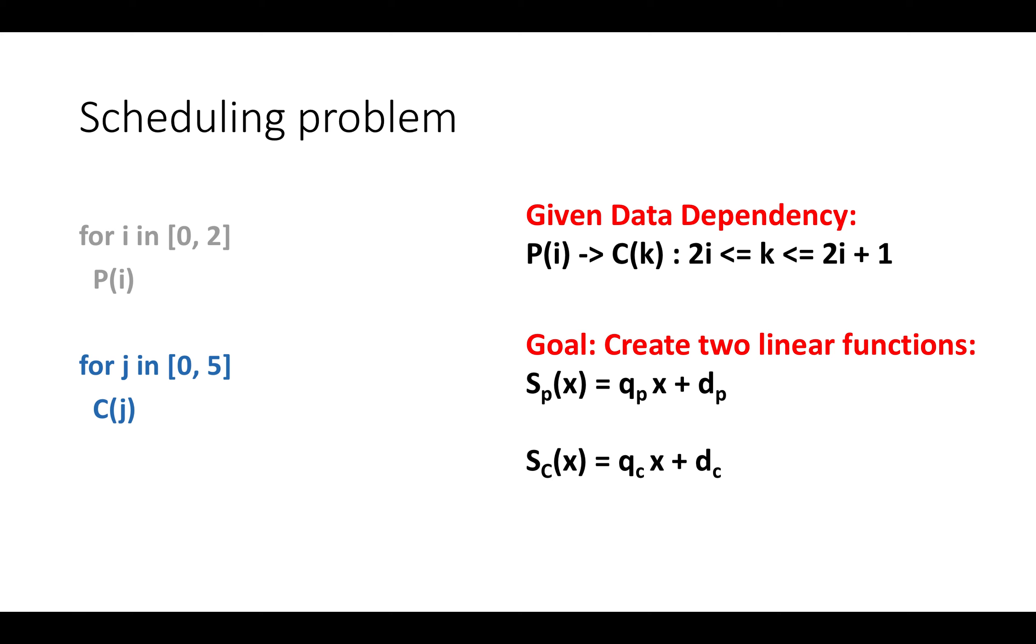So for our dependence, our scheduling problem, we can use the synchronous data flow approximation, we can call the first guy the producer, or PI, and we can call the second guy the consumer, and we'll say instances of the consumer are CJ.